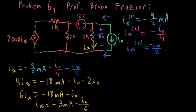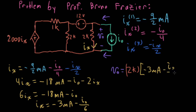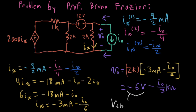Now that I know what IX is, I can find V0 from Ohm's law: V0 equals 2K times IX, which is 2K times (minus 3 milliamp minus I-naught over 6), giving minus 6 volts minus I-naught over 3 kΩ. This looks like a voltage source minus the voltage drop across a resistor due to the current flowing. So my Thevenin equivalent voltage is minus 6 volts, and my Thevenin equivalent resistance is one-third kΩ.